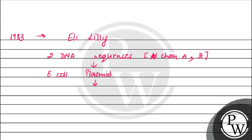When these two DNA sequences were introduced in the plasmids of E. coli, two chains of insulin were produced. Chain A and chain B. Both chains were produced and then they were extracted.